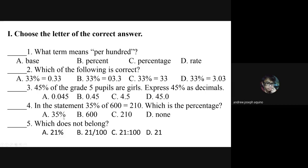Letter A: 35 percent. Letter B: 600. Letter C: 210. Letter D: none. Number five: which does not belong? Letter A: 21 percent. Letter B: 21 over 100. Letter C: 21 is to 100. Letter D: 21.